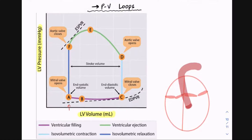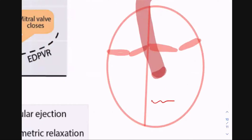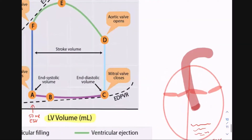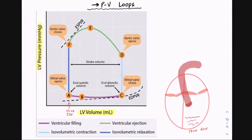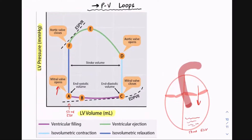I like to start from point A. Point A is my end systolic volume — let's say it's about 50 ml ESV. Remember that ESV is whatever little volume is left behind from the previous cycle. Once we have our ESV we can start our filling phase. For the filling phase I need my mitral valve to be open so blood can come down and fill the ventricles. Point A is also where the mitral valve opens.